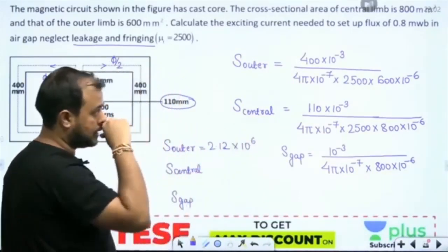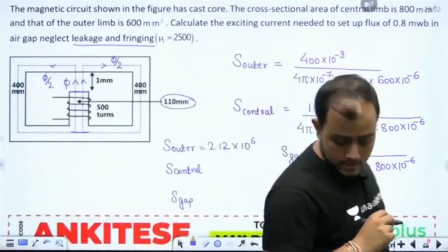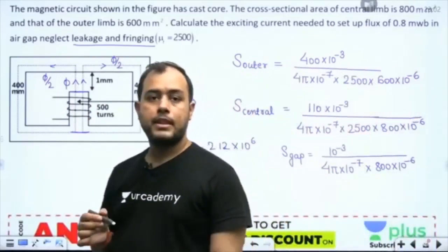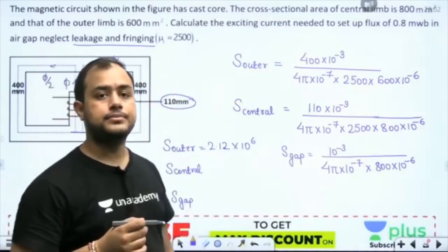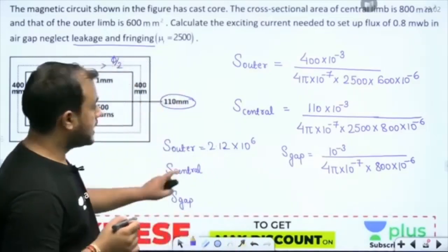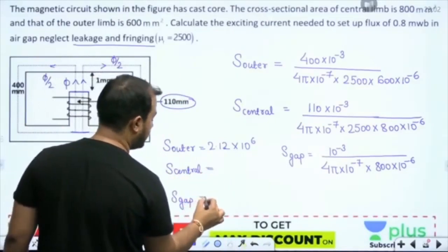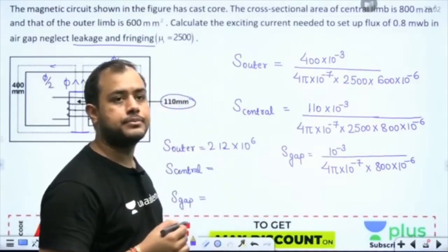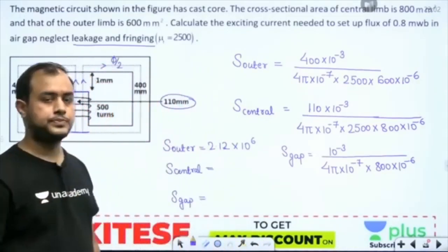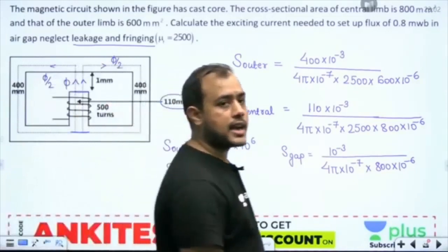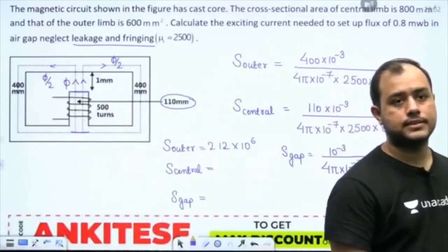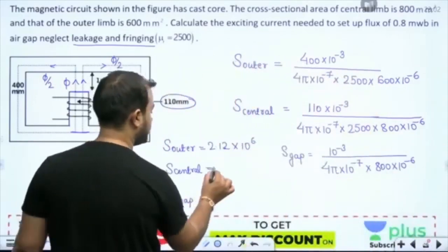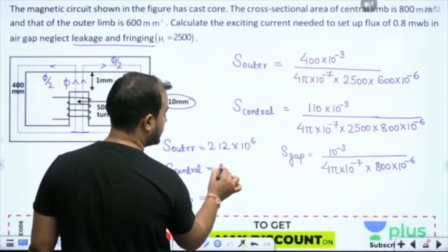Let me take the answer that you guys are telling me. What about central? What about central, my friend? This is the outer limb. Can anybody tell me the reluctance of central limb? 43,767.